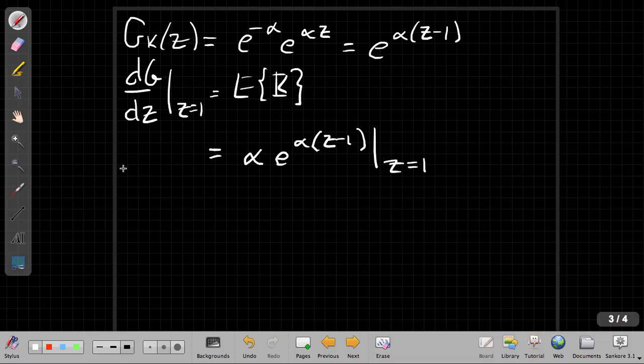Evaluating at z equals 1, if I put z equals 1 in up this, this becomes 0. So e to the 0 becomes 1. So when that's all done, what I'm left with here is alpha times e to the 0, which is alpha.